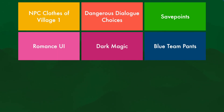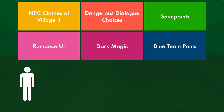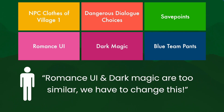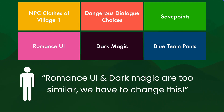For example, let's say we have all these colors and we're happy with them. But a director comes in after some user testing and says the romance UI and dark magic are too similar. We have to change this. And so they changed the dark magic to be darker — so now the VFX for dark magic should be darker.